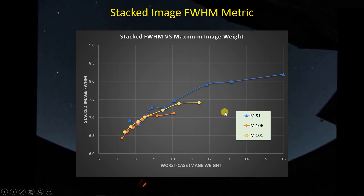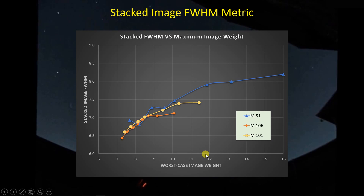Here's the first plot. For the three galaxies - M51, M106, and M101 - the vertical axis shows the stacked image full width at half maximum, as measured by the subframe selector script. The horizontal axis shows the worst-case image weight for a given stack. Each point represents one of those stacked image files. For example, one stack has a worst image grade of about 11.9, while the stack including all images has a worst case of 15.99.